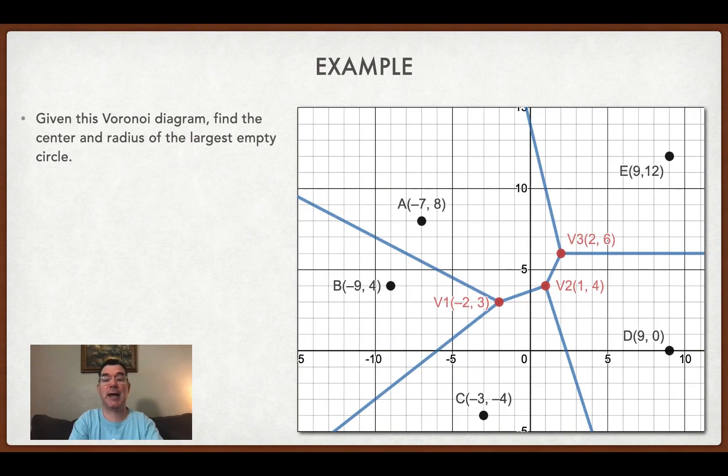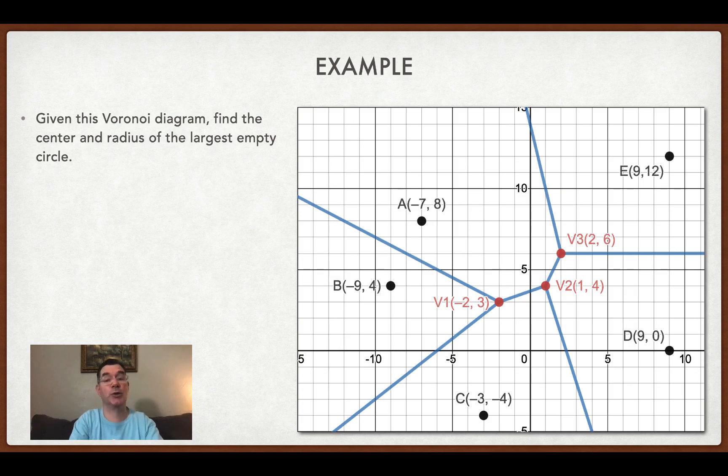So it's better to do this with a diagram. So I have a Voronoi diagram. There are five sites there and there are three vertices. So basically you can think of those five sites as being towns and each of those vertices is a potential location for a toxic waste dump.